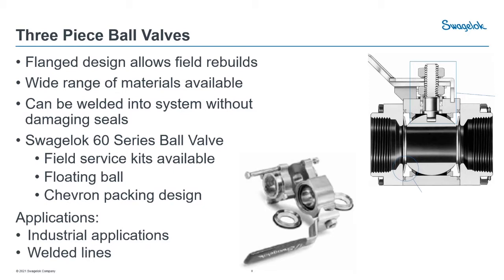From two-piece, we evolve into the three-piece ball valve — the Swagelok 60 series. It's a flange design that allows field rebuild. There are four bolts holding the flange faces together, putting compression onto the valve seats. You can loosen three of the bolts in-line with the valve isolated, swing it out, and actually remove the ball and change the seats — doing all maintenance right there in the field, in place. There's also a wide range of materials available, and you can vary the two flanges independently. Field service kits are available, making it easy to maintain.